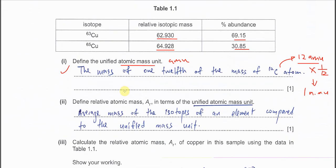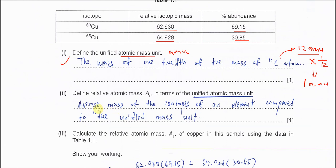And part two, define relative atomic mass Ar in terms of the unified atomic mass unit. So this one is just like last time, but the later part here is changed to the unified atomic mass unit. So for this, the first part: average mass of the isotope of an element compared to the unified mass unit. So last time is the mass of the carbon-12 atom. So now you just need to put the unified mass unit.